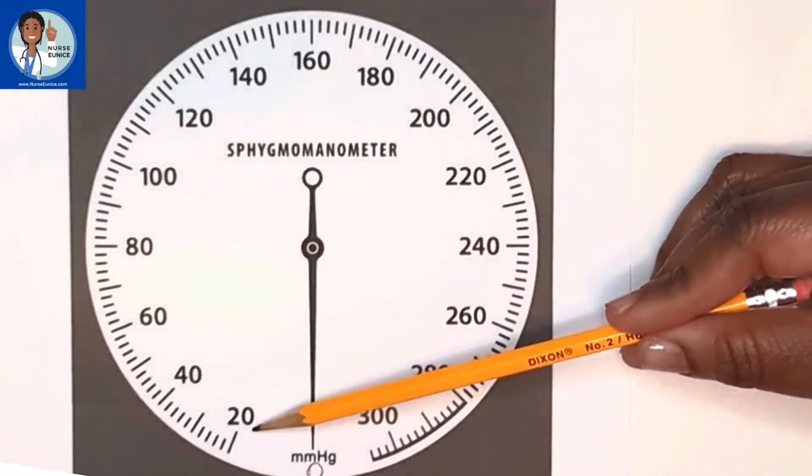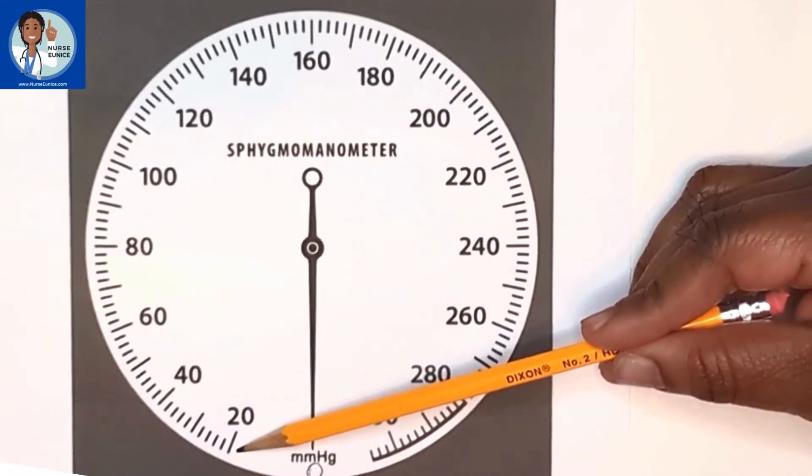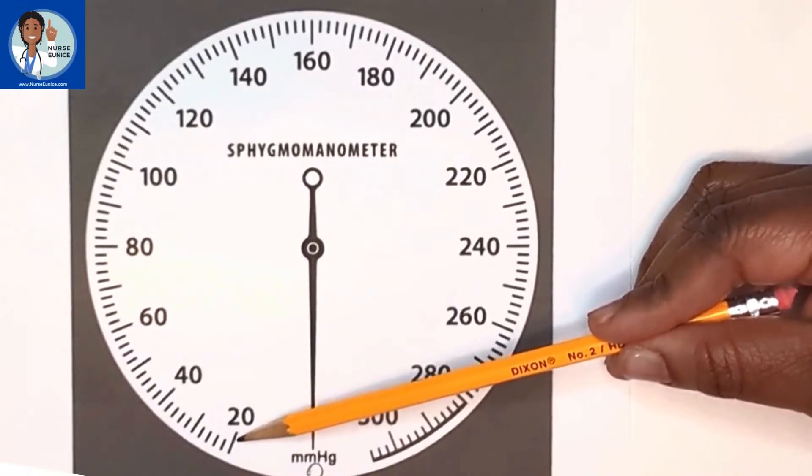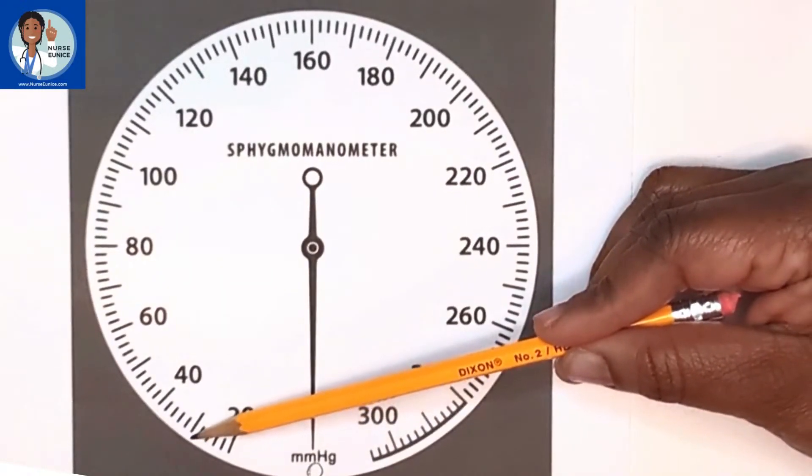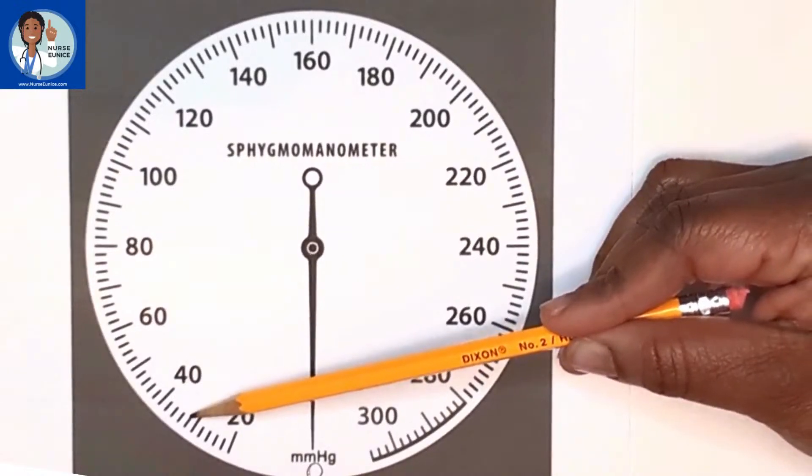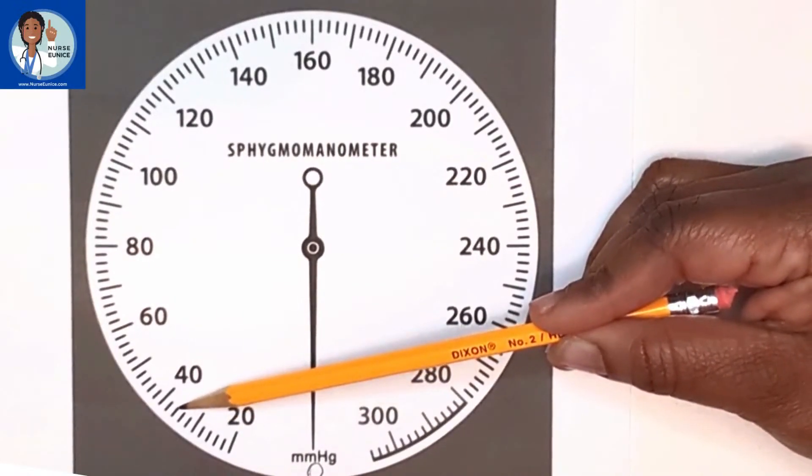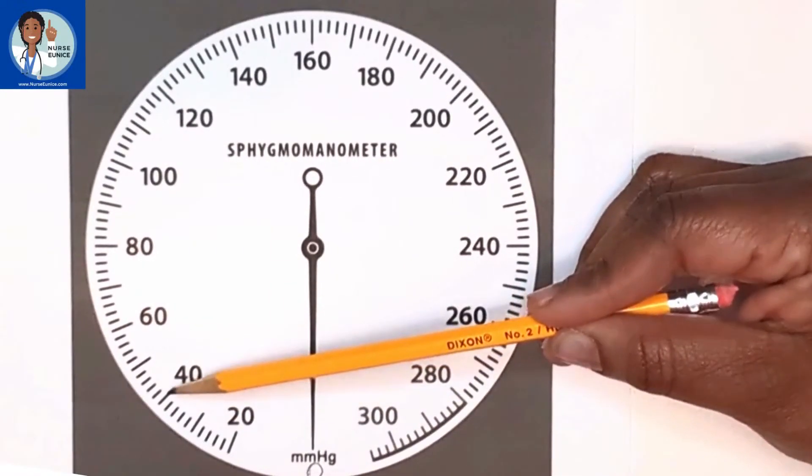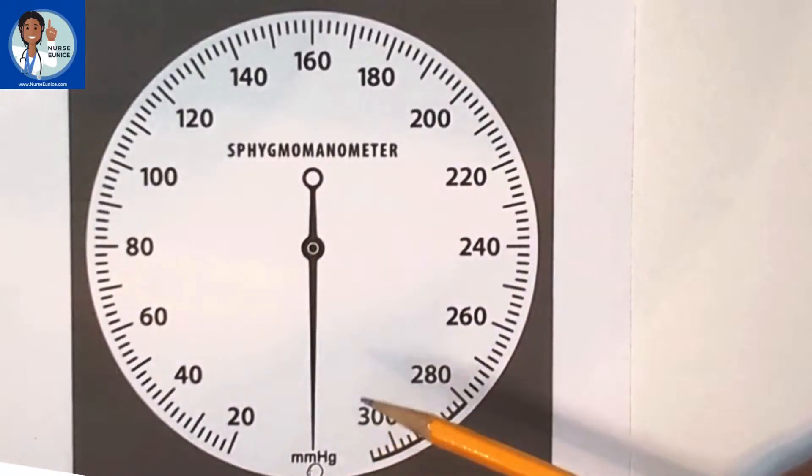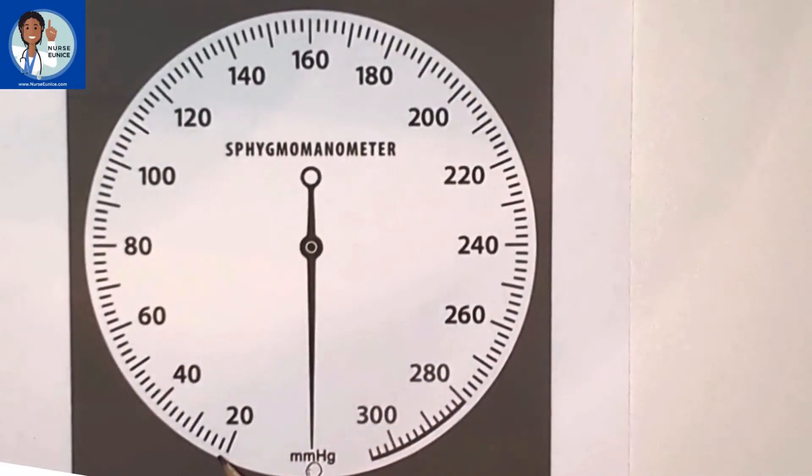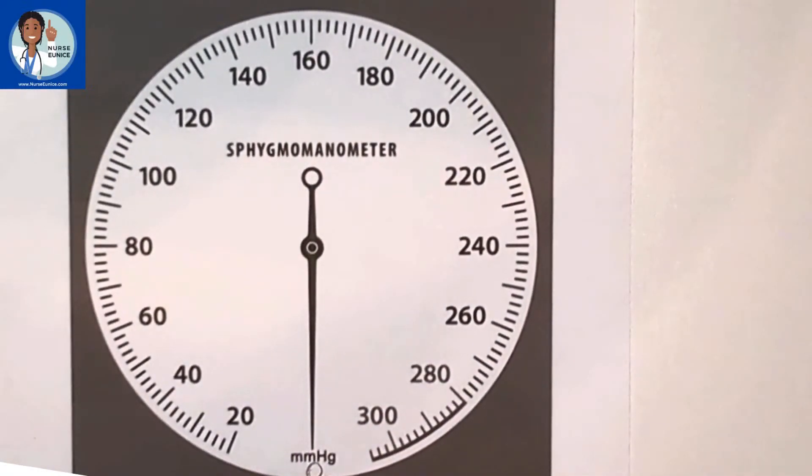Here we have a dark line, a long dark line, followed by four short lines, another long dark line, followed by four short lines, and then another dark line. This is how it reads. Everything's in increments of two. You cannot get an odd number when you're taking a manual blood pressure.